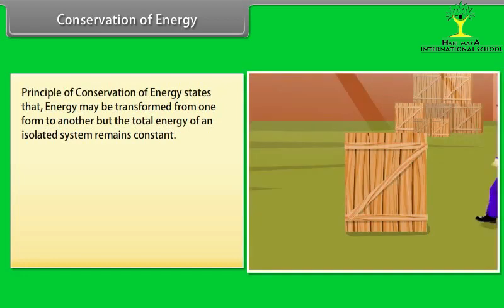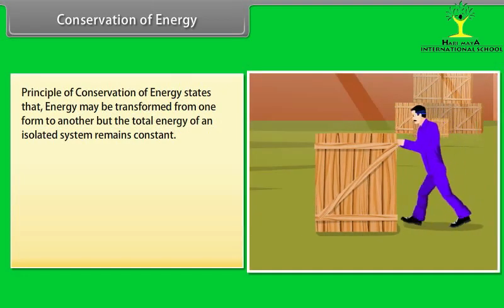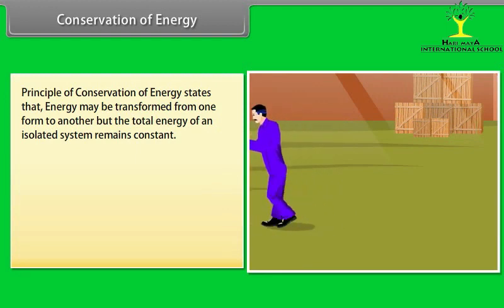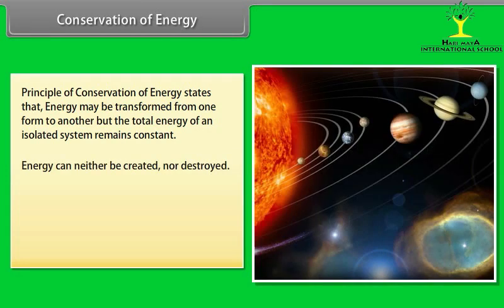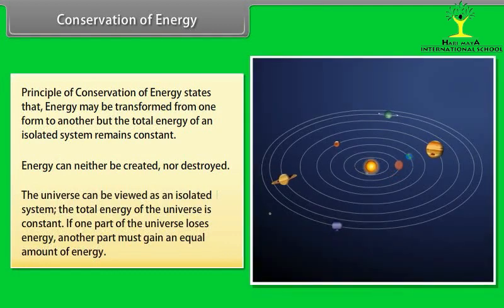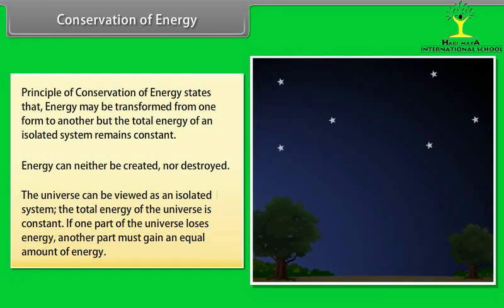Conservation of Energy. Principle of conservation of energy states that energy may be transformed from one form to another, but the total energy of an isolated system remains constant. Energy can neither be created nor be destroyed. The universe can be viewed as an isolated system. The total energy of the universe is constant. If one part of the universe loses energy, another part must gain an equal amount of energy.